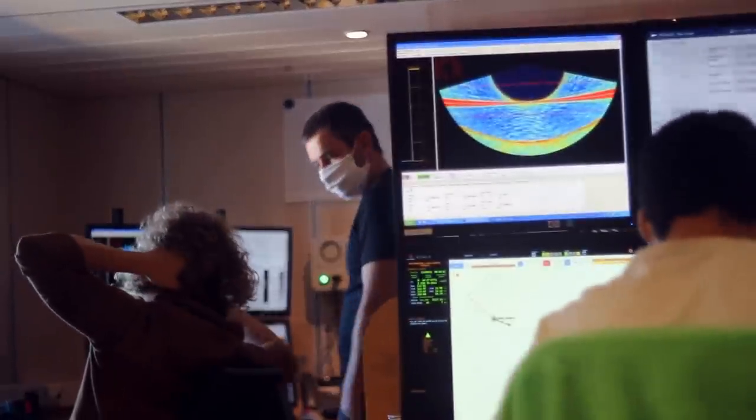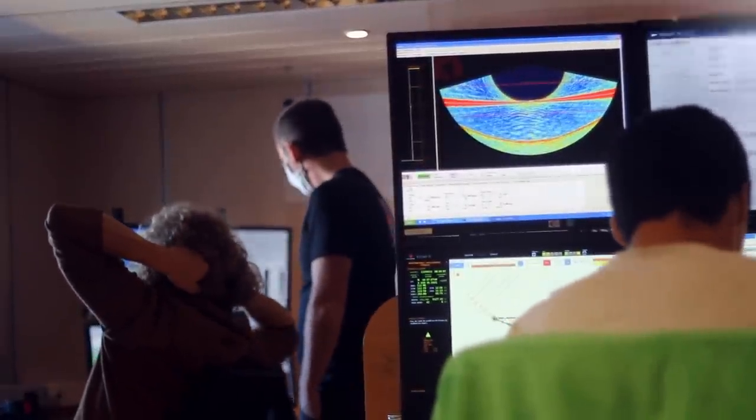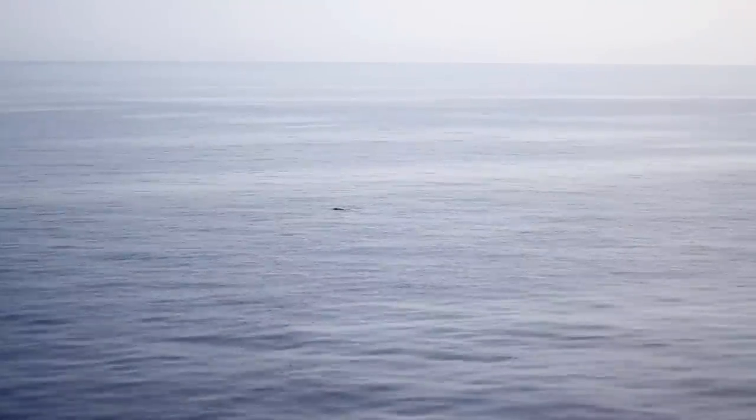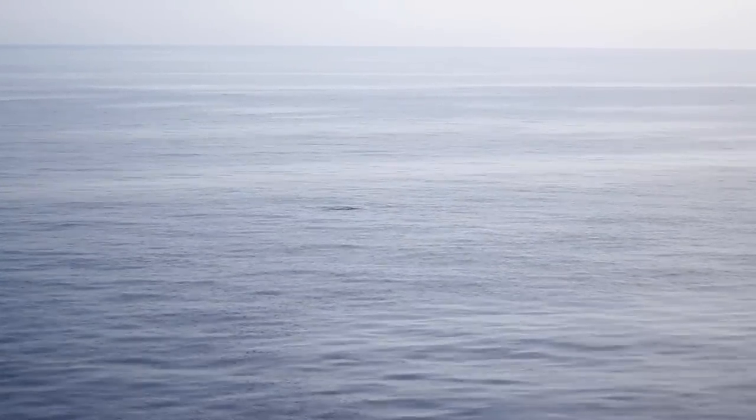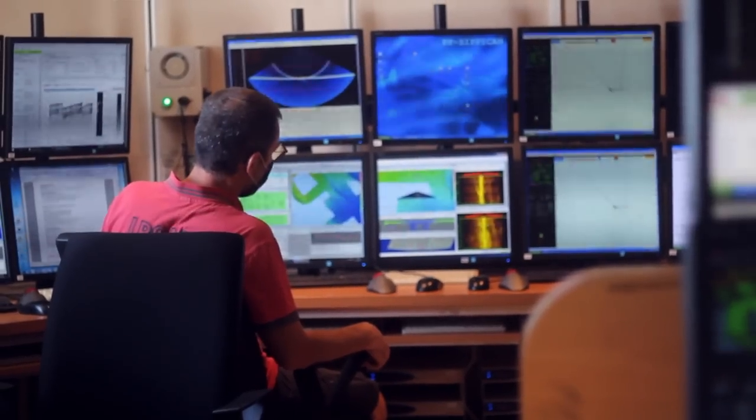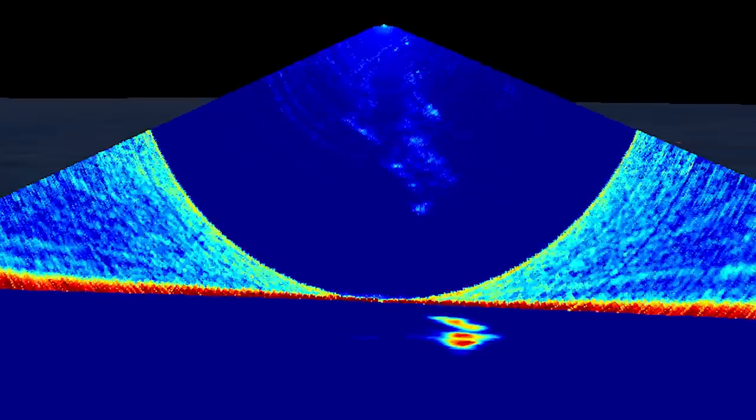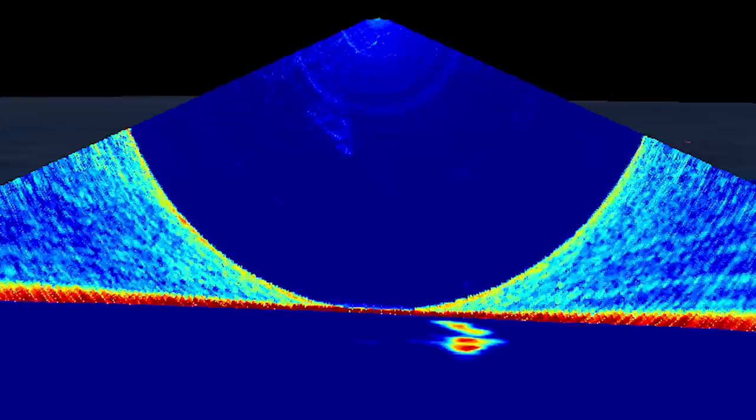Le sondeur multifaisseaux est alors mis en marche par le personnel Genavire, en espérant que les mesures ne soient pas perturbées par les vocalises de certains dauphins. Au bout de quelques minutes, les premières images commencent à nous parvenir. Celles-ci prennent la forme d'un disque bleu, où les anomalies acoustiques apparaissent en jaune.